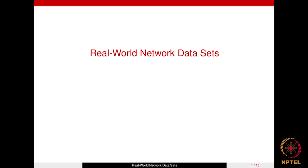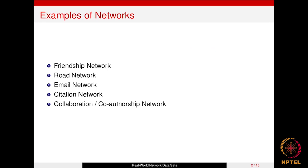Before getting into the formats, let's look at some examples of networks on which data is available. We have friendship networks, where nodes are people and a link exists between two nodes if those people are friends. We also have road networks, where nodes are cities connected by roads. Both of these are typically undirected networks.